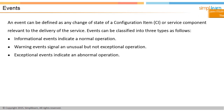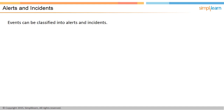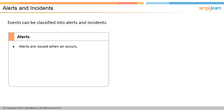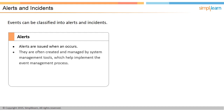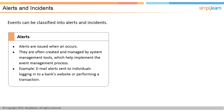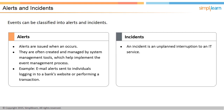In the next screen, let us discuss alerts and incidents. Events can be classified into alerts and incidents. Alerts are issued when an event occurs. System management tools, which help implement the event management process, often create and manage alerts. The objective of an alert is to notify the concerned stakeholders so that corrective action can be taken if required. For example, when individuals log into a bank's website or perform a transaction, they receive an email alert.